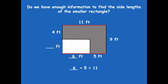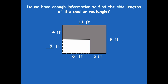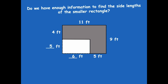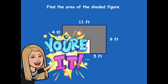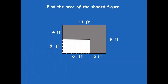Now I know all the side lengths along that side. For the width: if one side is 9 feet, the other is 9 feet. So 4 plus blank equals 9, meaning the missing side is 5. Now we have all the information we need to find the area of the shaded part. Pause the video and find the area of the shaded figure, just the gray part. Then click play when you're ready to go over it.